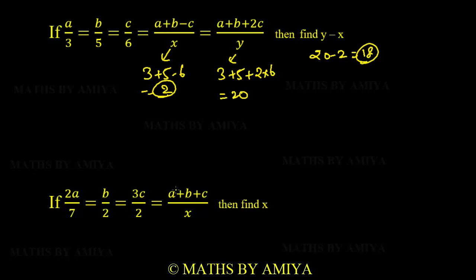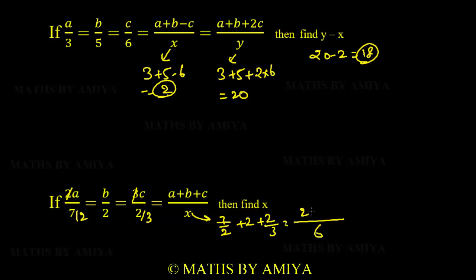For question 2, we need to find a+b+c. We divide to get a = 7/2, b = 2, c = 2/3. The ratio is a/(7/2) = b/2 = c/(2/3). So a+b+c corresponds to 7/2 + 2 + 2/3. LCM is 6: 21/6 + 12/6 + 4/6 = 37/6.